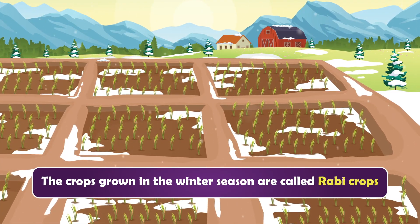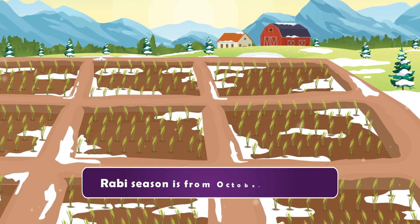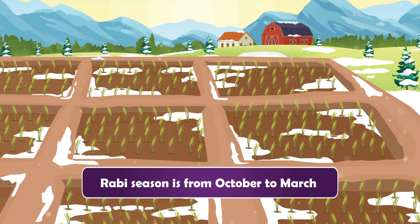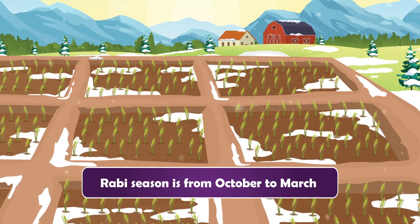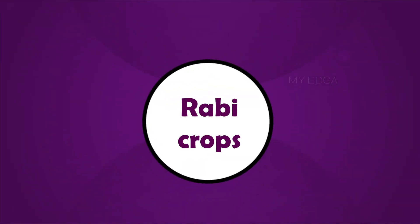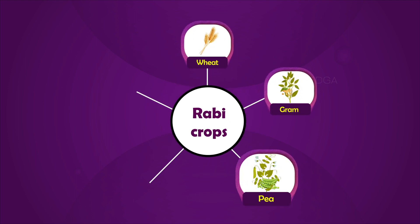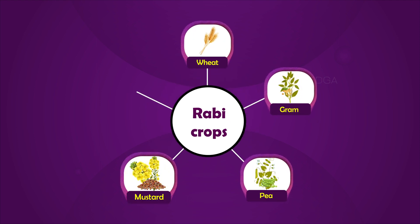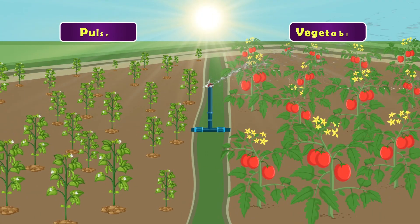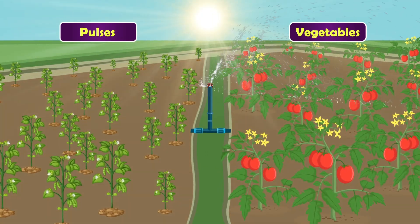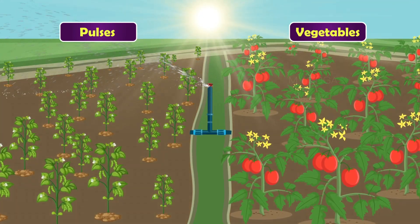The crops grown in the winter season are called Rabi crops. The Rabi season usually starts in October and lasts up to March. Examples of Rabi crops are wheat, gram, pea, mustard, and linseed. Pulses and vegetables are also grown during summer in many places.